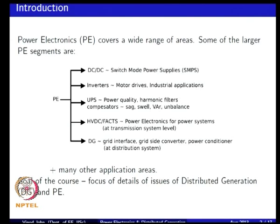These are all power quality related segments for power electronics, and at the very high power level you have HVDC, which is high voltage DC systems, and flexible AC transmission systems, which are used at the very high power level.